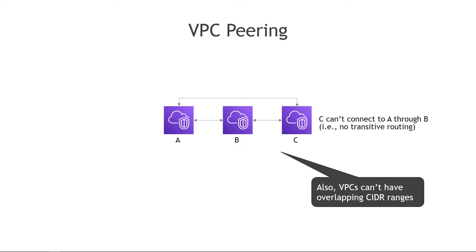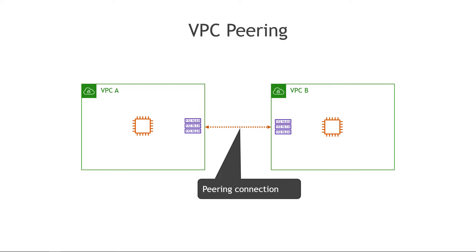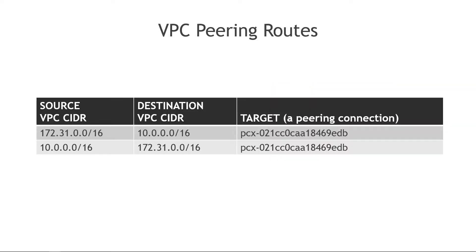You'd have to do a separate direct peering connection between A and C. The other caveat is that your VPCs can't have overlapping CIDR ranges — that would obviously cause addressing conflicts. And on the peering connection, you also have to modify the route tables to allow traffic back and forth. For example, in one VPC traffic destined for the other VPC should go to the peering connection, and then vice versa — these are basically a mirror of each other.